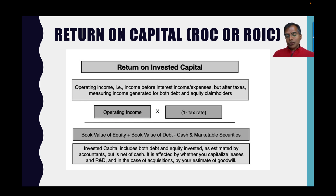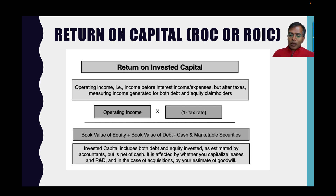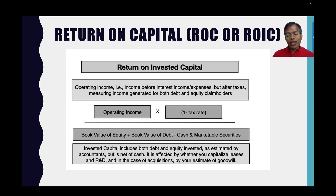The numerator is earnings before interest and taxes, but because you want the return in after-tax terms, you multiply by one minus the tax rate. Which tax rate should you use? You can use the effective tax rate, because that's basically what you paid on average, but you're applying it on the entire operating income — even though you paid tax only on your taxable income, you're acting as if you paid it on your entire operating income.